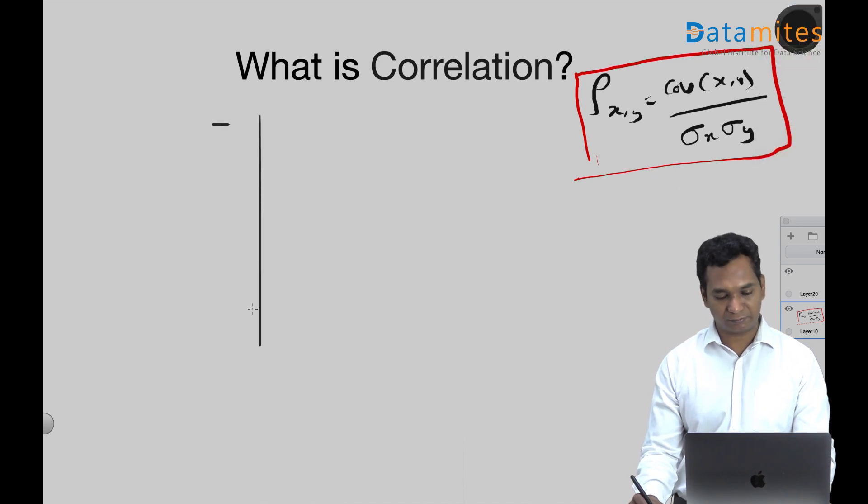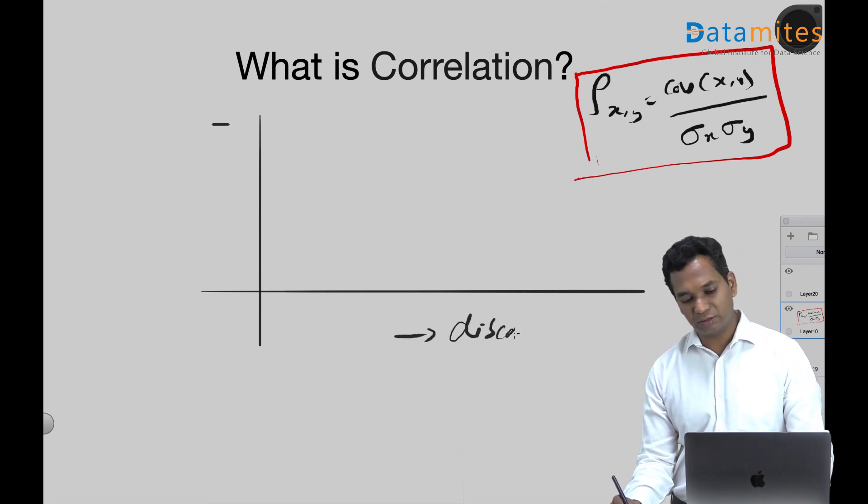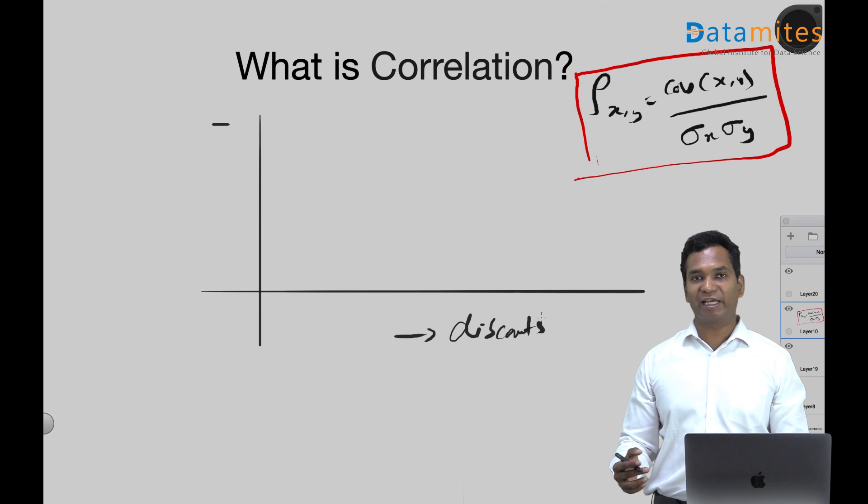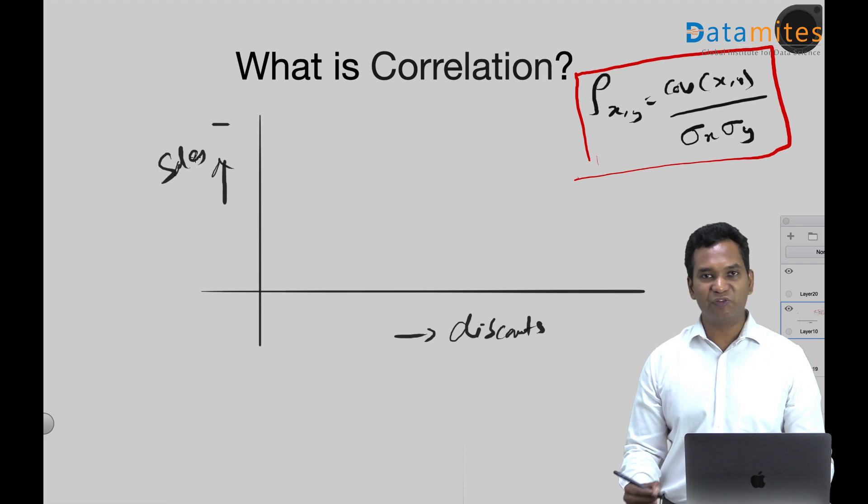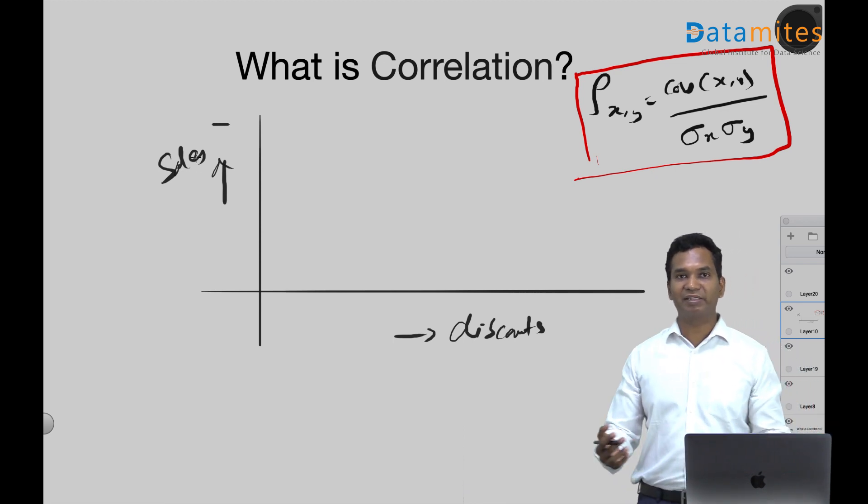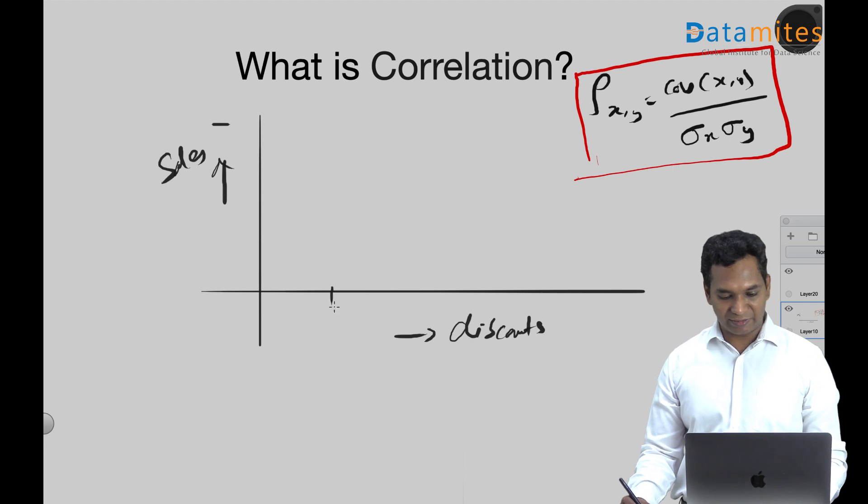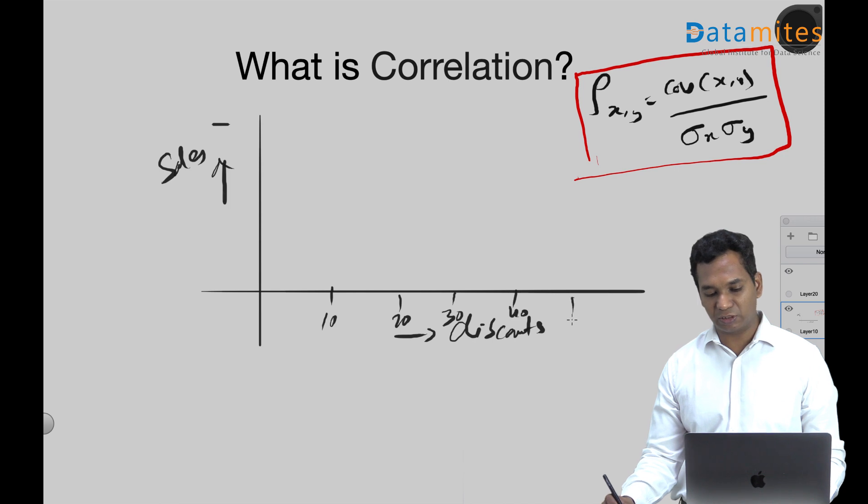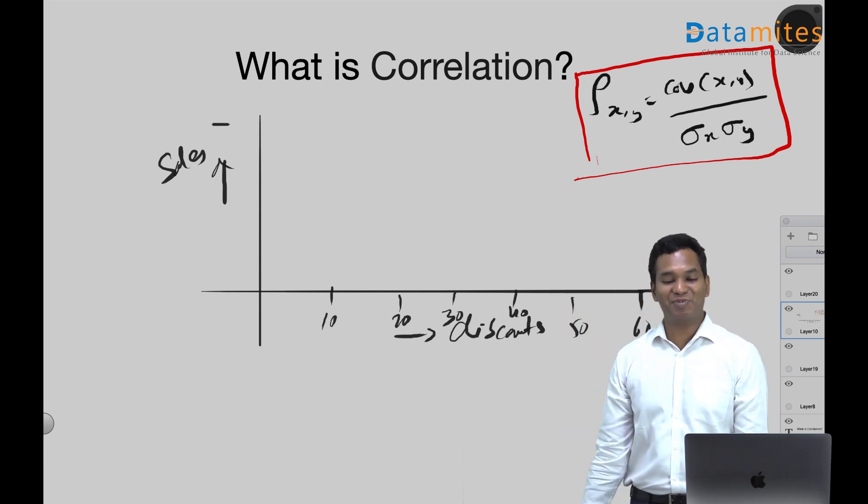Let's say you have two variables. One is discounts of a retail store like Amazon and the other one is sales. We know discounts and sales are somehow related - they're independent variables, random variables. So discounts - let's say we have 10% discount, 20% discount, 30% discount, 40% discount, 50% discount. Nowadays they are going way above it - 70, 80, 90% discounts.